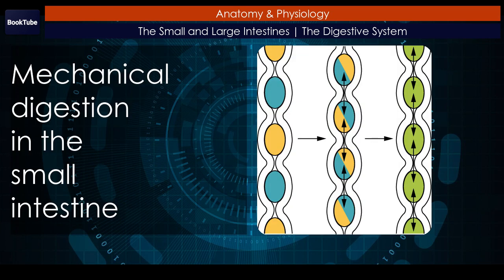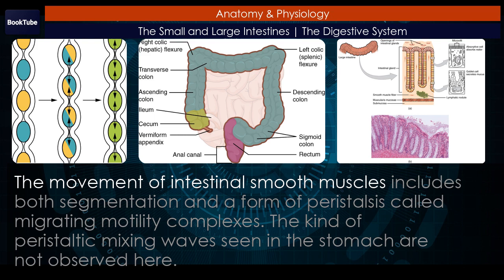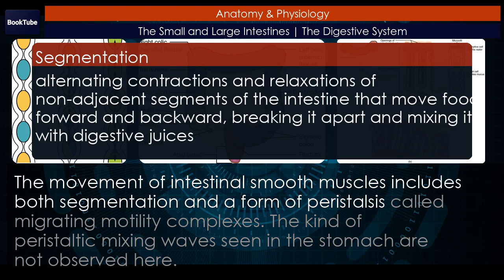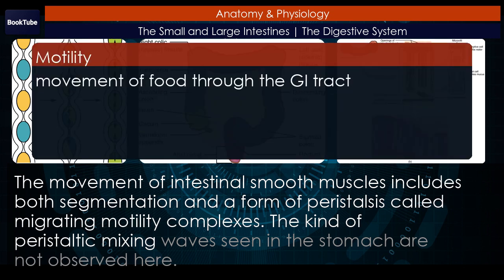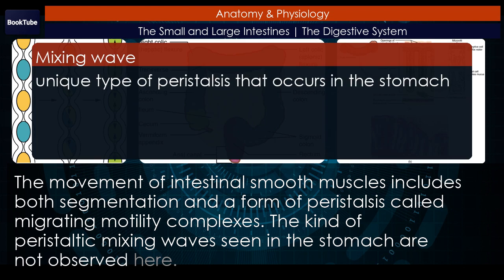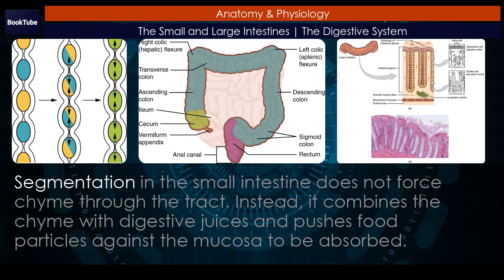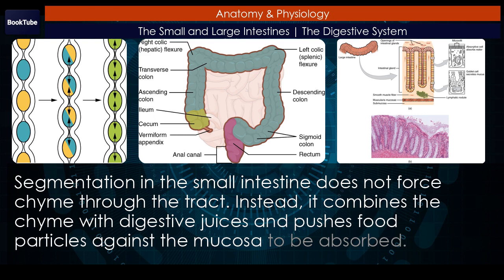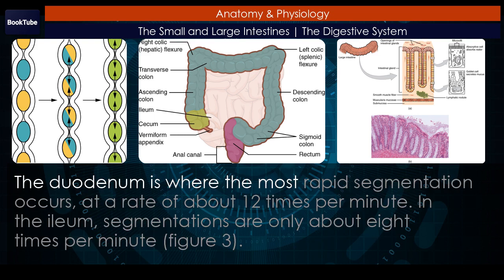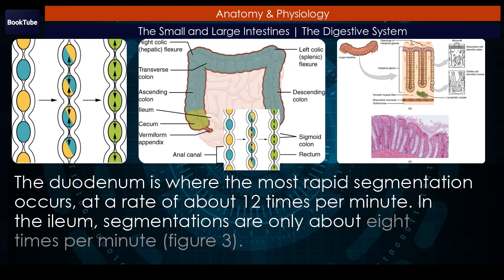Mechanical digestion in the small intestine. The movement of intestinal smooth muscles includes both segmentation and a form of peristalsis called migrating motility complexes. The kind of peristaltic mixing waves seen in the stomach are not observed here. Segmentation in the small intestine does not force chyme through the tract; instead, it combines the chyme with digestive juices and pushes food particles against the mucosa to be absorbed. The duodenum is where the most rapid segmentation occurs, at a rate of about 12 times per minute; in the ileum, segmentations are only about 8 times per minute.